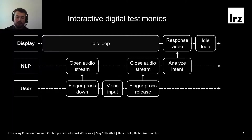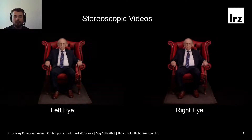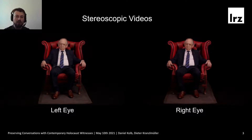We have around 1000 pre-recorded answers, out of which the NLP can select a response video. Once the response video has finished, the idle loop returns. We are also using stereoscopic 3D videos, which means there are two separate video streams — one for each eye — to increase the fidelity of the virtual human, to give him a more natural, more realistic look, as close as possible to the real human.